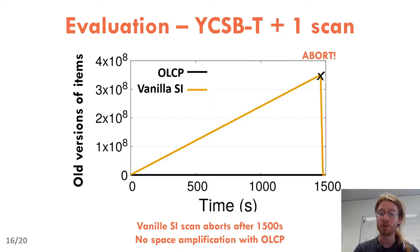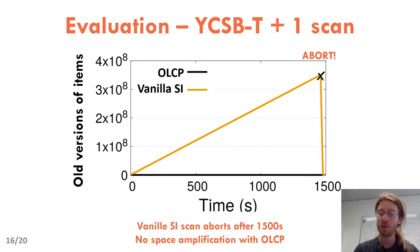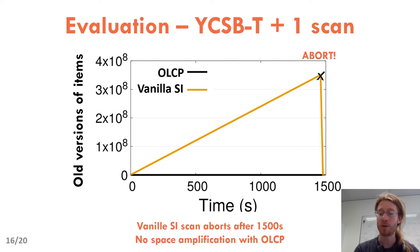The most important result is the number of versioned items. When the scan is executed using standard snapshot isolation, the database has to keep the old versions of items. As a consequence, the number of versioned items grows over time, and after 1500 seconds, the database has accumulated over 350 million items. At that point, the database runs out of disk space and aborts the scan. With OLCP, old versions are propagated to the scan and are not kept in the database, so the number of versioned items stays close to zero for the entire duration of the scan.